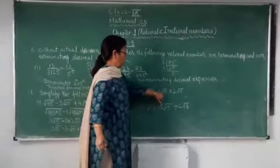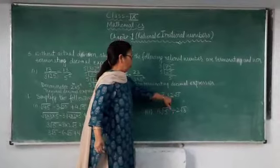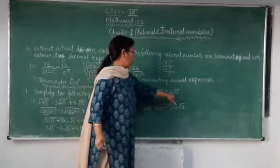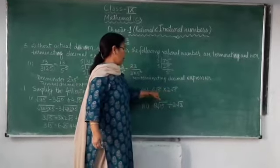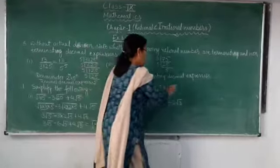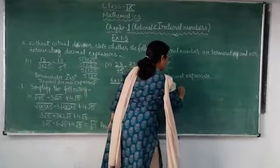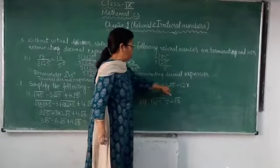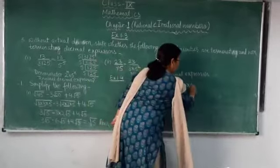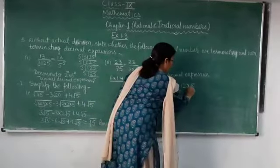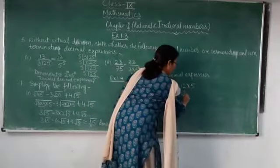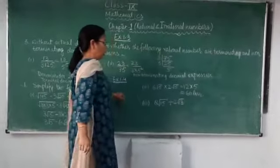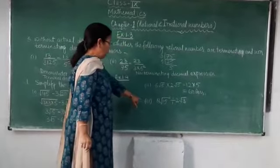The third part is 6√5 × 2√5. When we multiply the same number under the root sign, the root is removed. So 6×2 = 12 and √5 × √5 = 5, giving 12 × 5 = 60. So 60 is the answer.